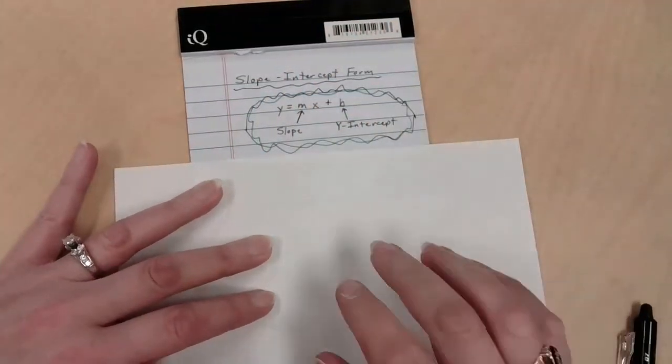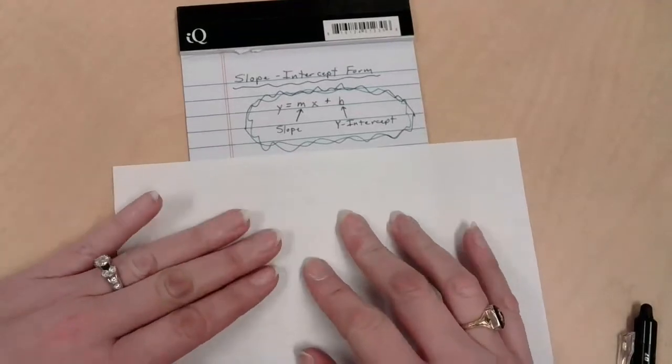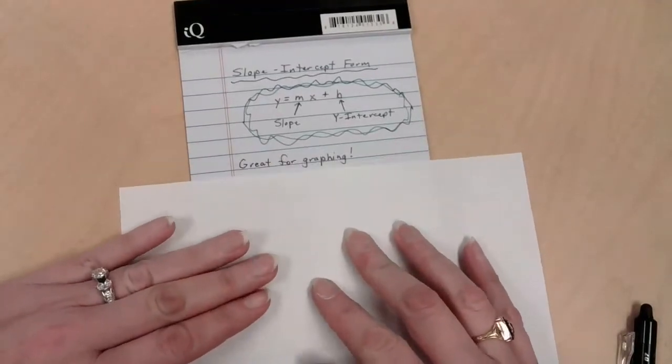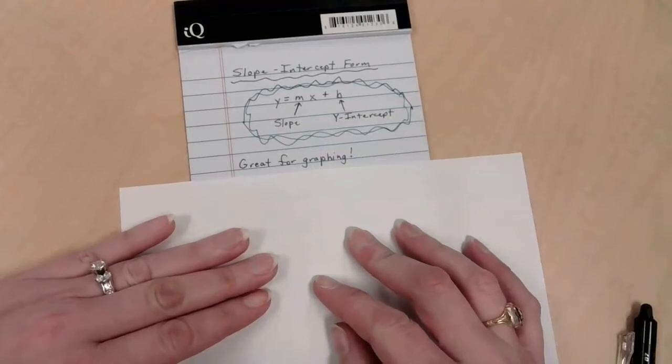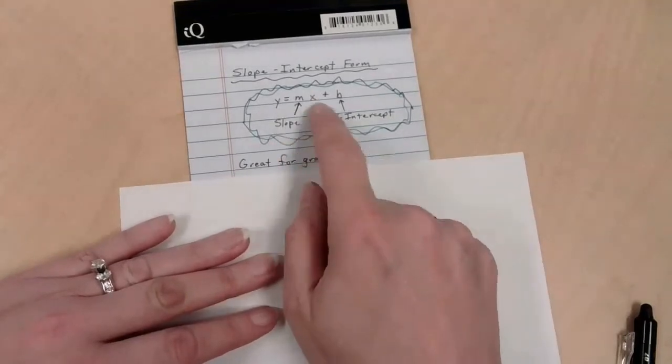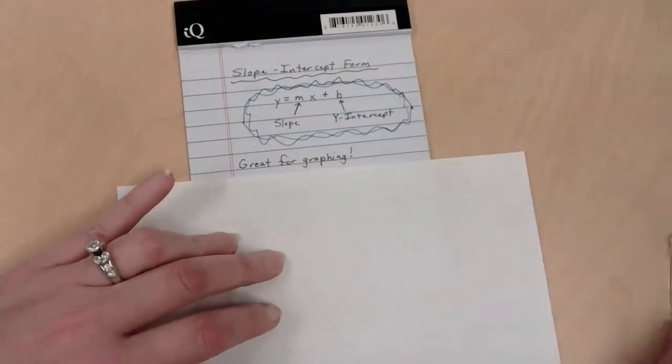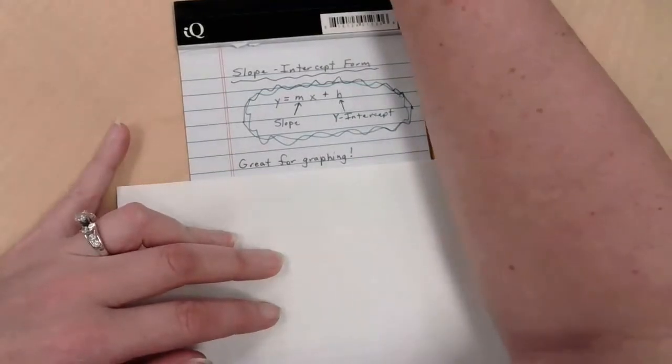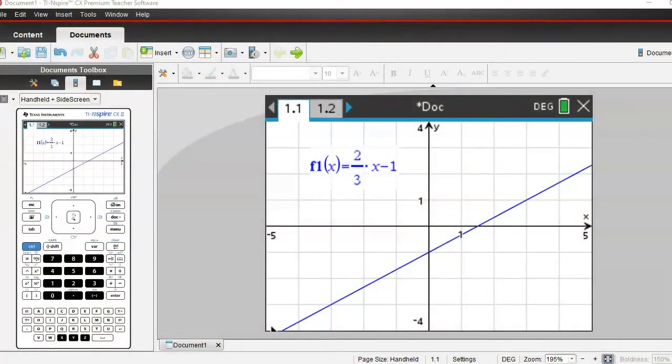So why do we like this? For starters, it's great for graphing. This form, y equals mx plus b, I'm going to have you take a look at my graph screen here. I've got, right now, this is f of x, that's the same thing as y.